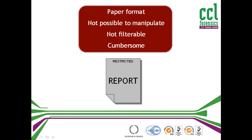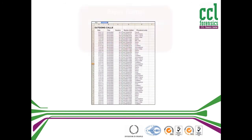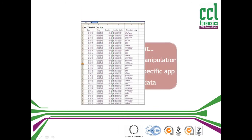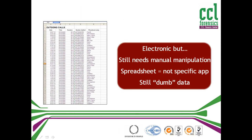The next level up is to provide investigators with the data in electronic format, usually a spreadsheet. This helps to a certain extent, but still needs extensive manual intervention, as spreadsheets aren't custom designed to help investigators handle large amounts of phone data. Even in this format, it's still just dumb data.